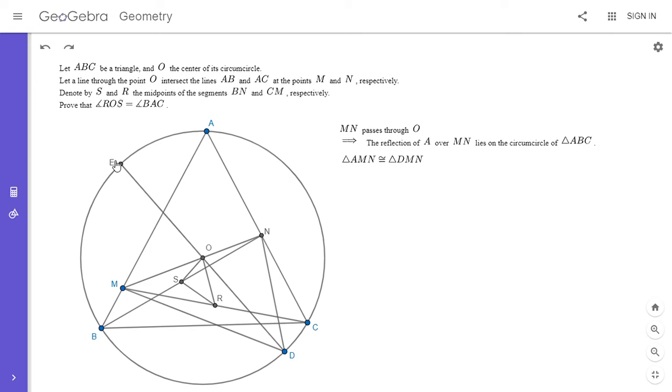If we want to apply the gliding principle, we want to show that triangles EBC and DMN are similar. Then we could apply it, and they would have to both be similar to triangle ROS.